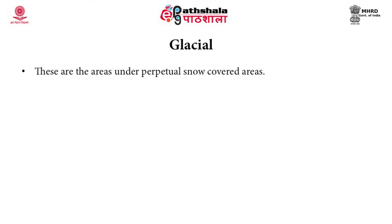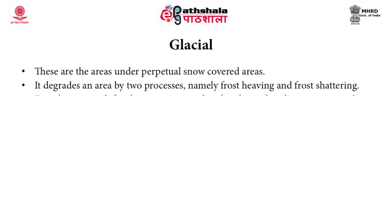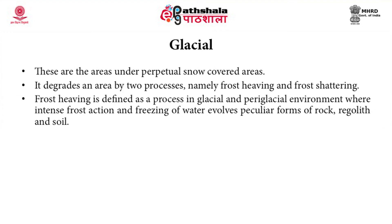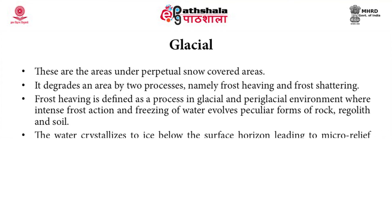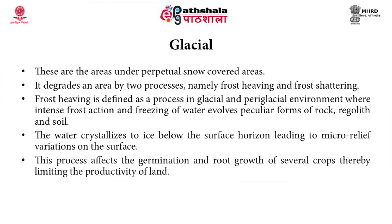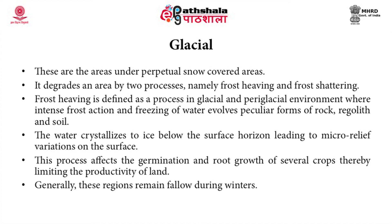Glaciers are areas under perpetual snow. Glacial processes degrade an area by two means: frost heaving and frost shattering. Frost heaving is defined as a process in glacial and periglacial environments where intense frost action and freezing of water evolve peculiar forms of rock, regolith and soil. The water crystallizes to ice below the surface horizon, leading to micro relief variations on the surface. This process affects the germination and root growth of several crops, thereby limiting the productivity of land. Generally these regions remain fallow during winters.